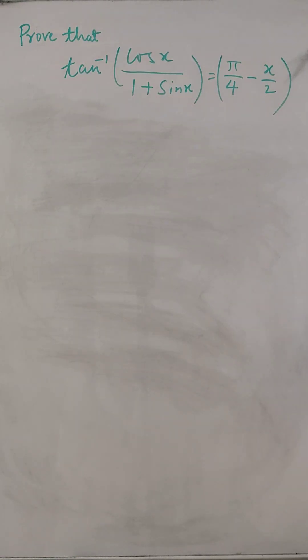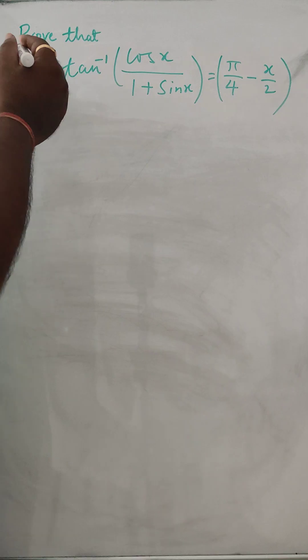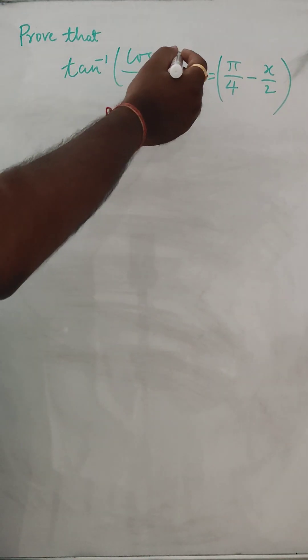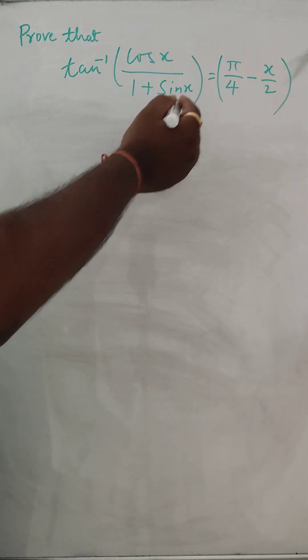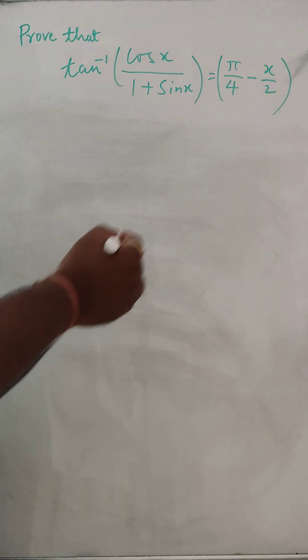Hello, so today we are going to solve this one problem, the trigonometric. Prove that tan inverse cos x divided by 1 plus sin x is equal to pi by 4 minus x by 2.